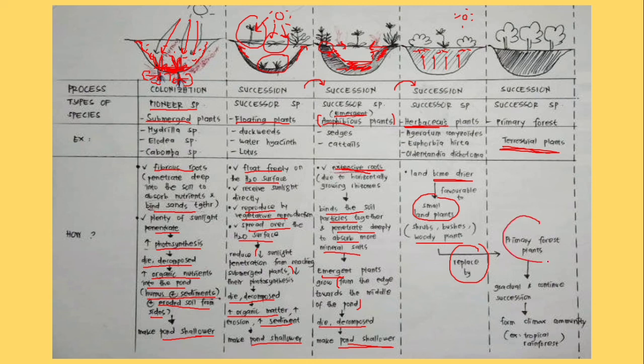This primary forest plants will continue this succession process to form climax community, or we call it as tropical rainforests.